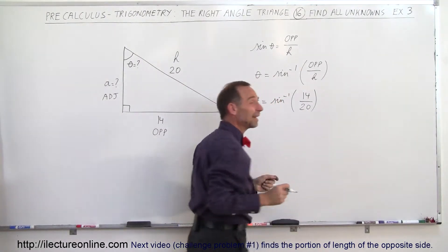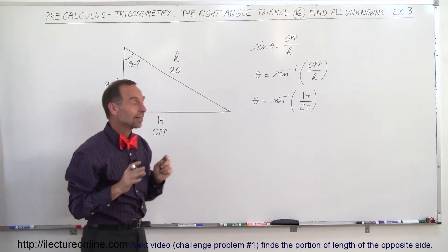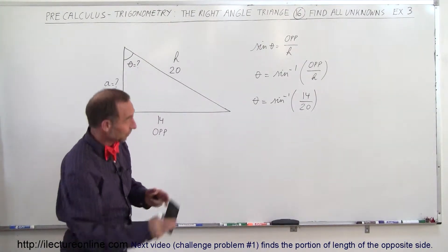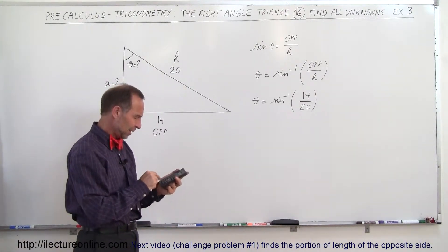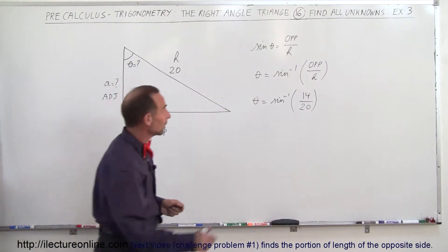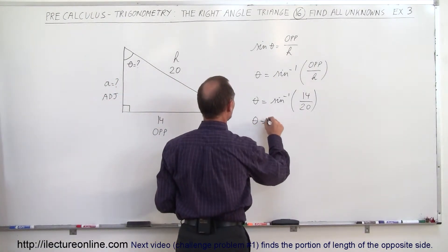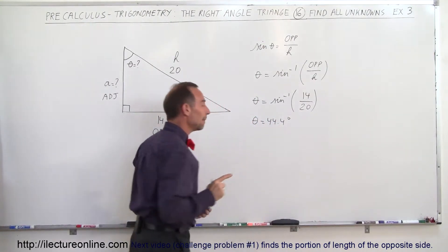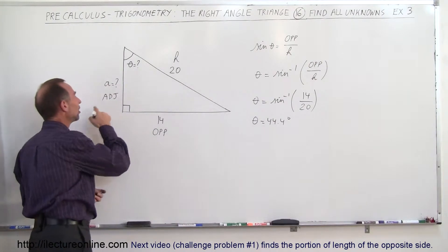In this step, we need a calculator. We take 14 divided by 20 and take the inverse sine of that, and we get 44.4 degrees. So theta equals 44.4 degrees. Now we're trying to find the adjacent side.